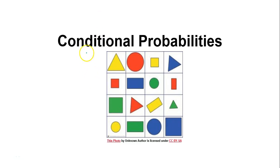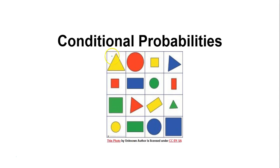Hello, in this video we will discuss conditional probabilities. I have pictured on the screen various shapes of various sizes and colors. If I asked you what was the probability of getting a yellow triangle, you can see there are 16 different shapes of varying colors and there's only one that's a yellow triangle, so the probability would be 1 out of 16.